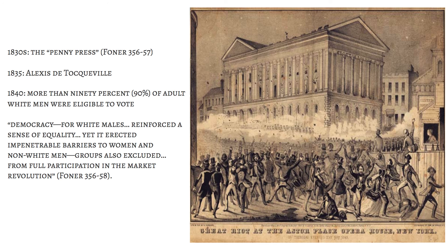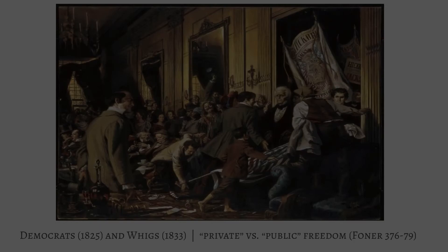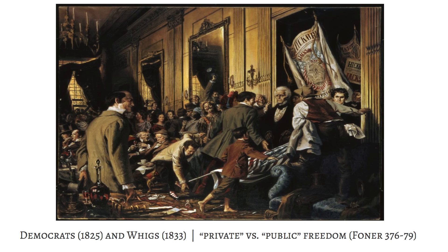So this era — one of the centerpieces of this time period is the election of President Andrew Jackson. He's on the $20 bill with that really cool pompadour hairstyle. When you think of the 'common man' president, or populism — like when George Bush was president people said he was the kind of guy you wanted to sit down and have a beer with — Andrew Jackson is really the first president that was marketed that way.